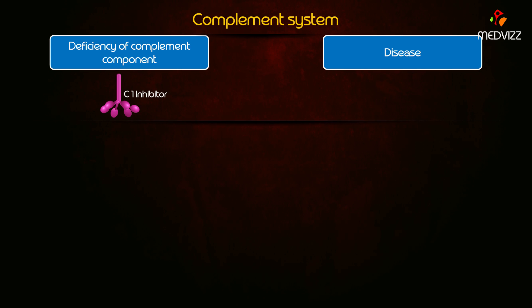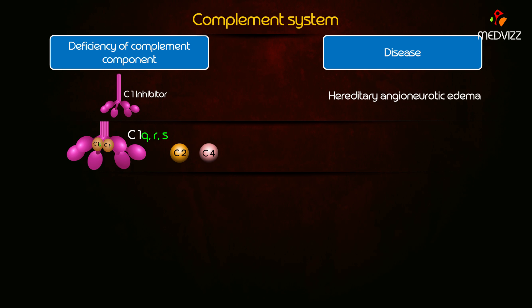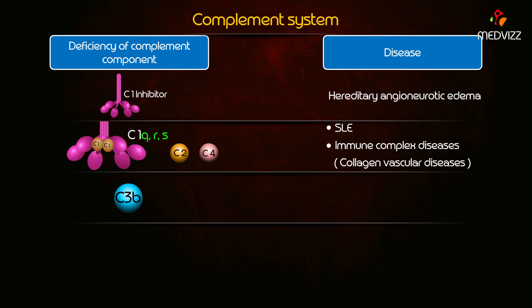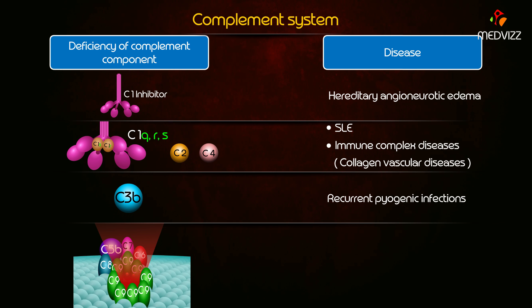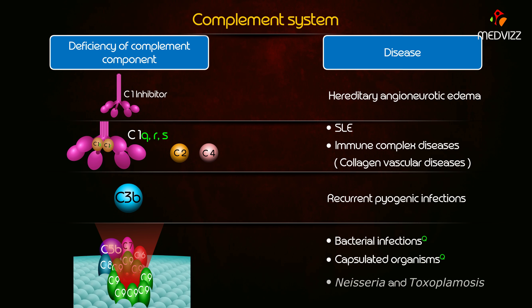Regarding complement deficiencies: C1 inhibitor deficiency causes hereditary angioneurotic edema. Deficiency of C1q, C1rs, C2, and C4 is responsible for systemic lupus erythematosus and immune complex diseases such as collagen vascular diseases. Deficiency of C3b causes recurrent pyogenic infections. Deficiency of the membrane attack complex (C5 to C9) causes bacterial infections, especially by encapsulated organisms like Neisseria and Toxoplasma.